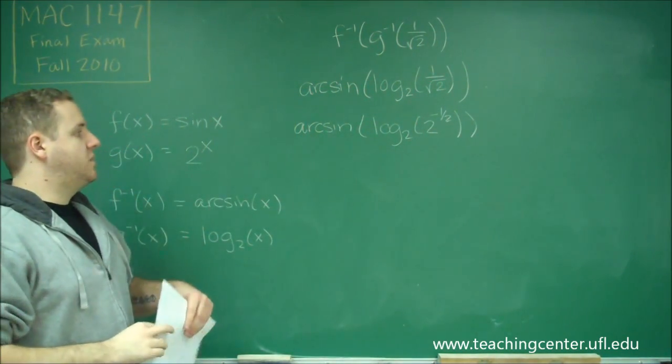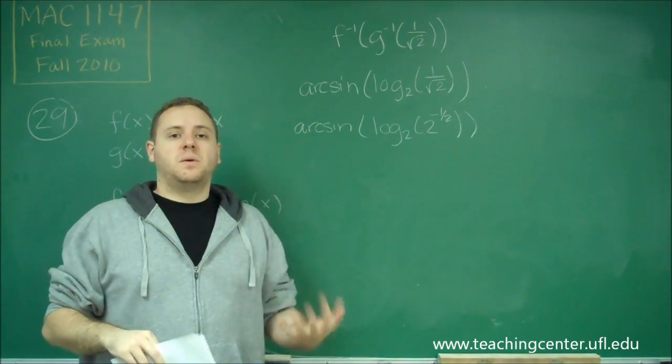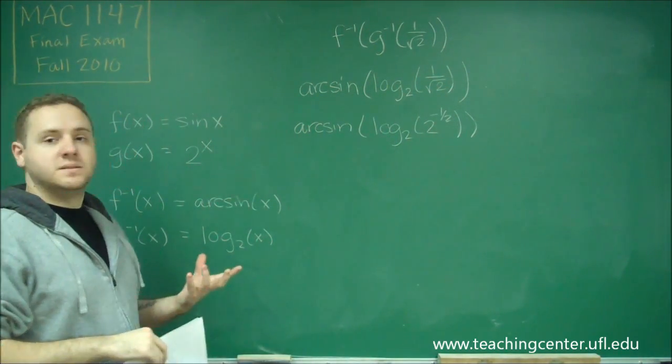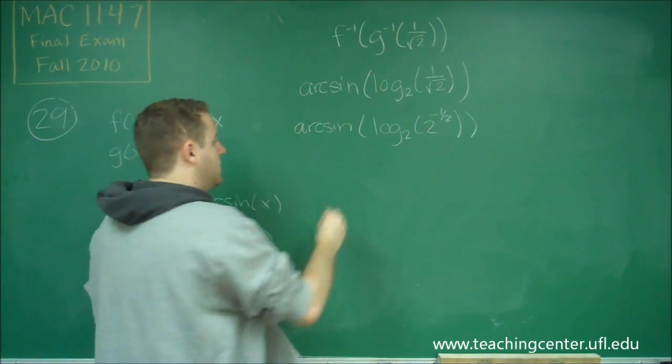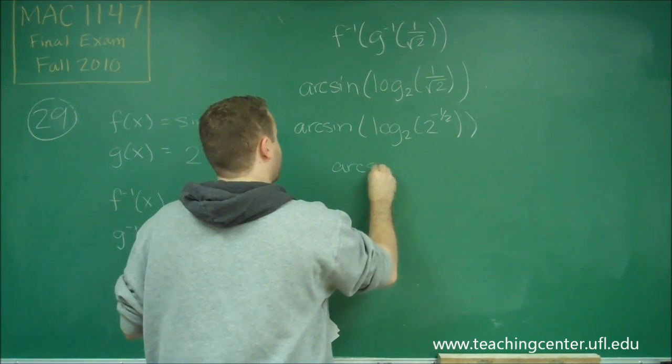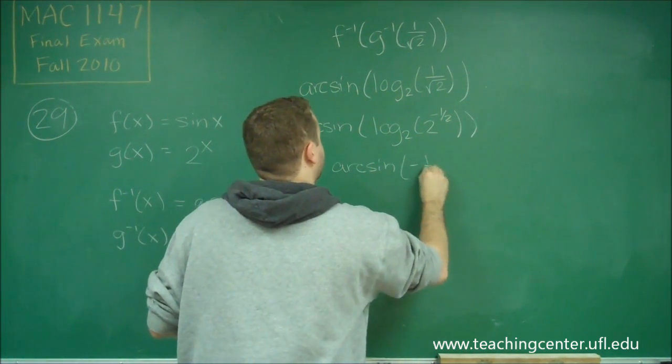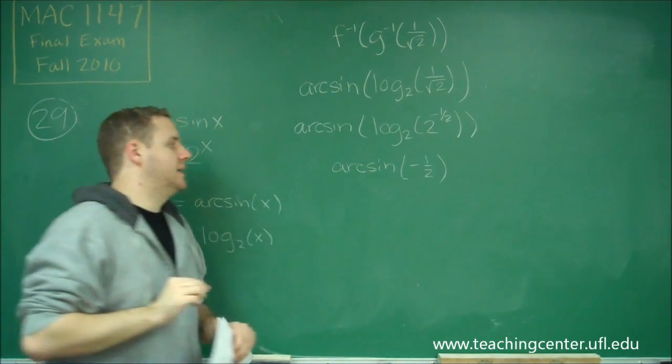Alright, so if we have log base 2 of 2 to a power, we just get the power because the bases essentially cancel out there. So now we're just doing arc sine of negative 1 half.